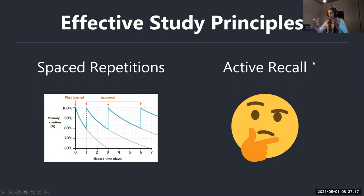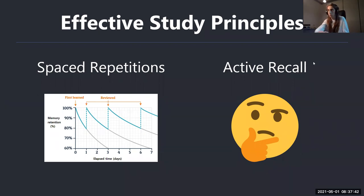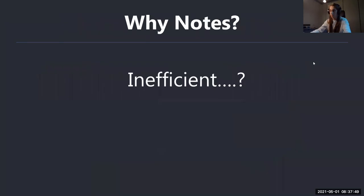The second principle is active recall — the method of actually recalling information from your mind before you review it. That means instead of just rereading or highlighting, you actively try to answer questions about the things you're trying to remember. That was quick — if anyone has questions about this we can take them now, but I'd prefer not to focus on it too much.